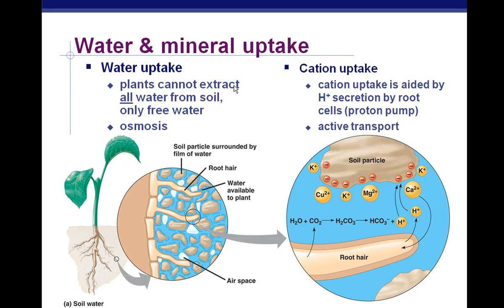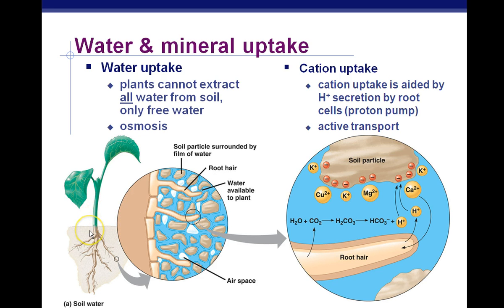Water uptake by plants is a result mainly of osmosis, going from high water potential to low water potential within the roots. This causes root pressure, which is a small push from the roots to push up the water. However, most of the pull to bring water up is due to transpiration, which involves adhesion, cohesion, and evaporation from the leaves.